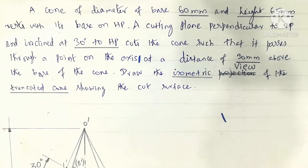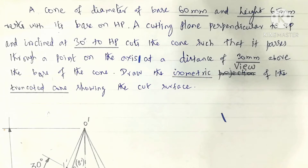A cone of diameter of base 60 mm and height 65 mm rests with its base on HP. A cutting plane perpendicular to VB and inclined at 30 degrees to HP cuts the cone such that it passes through a point on the axis at a distance of 30 mm above the base. Draw the isometric view of the truncated cone showing the cut surface.